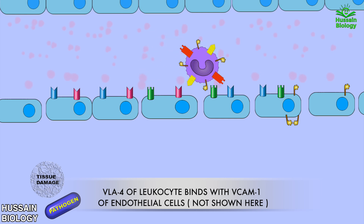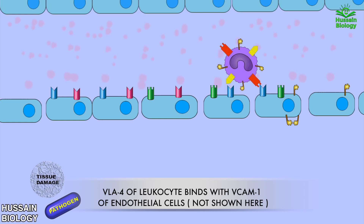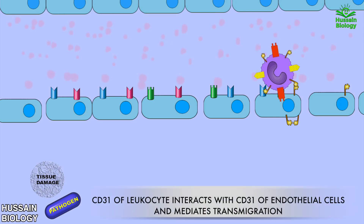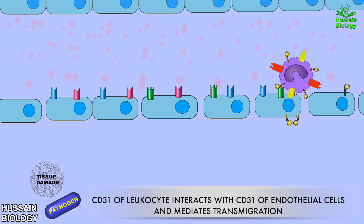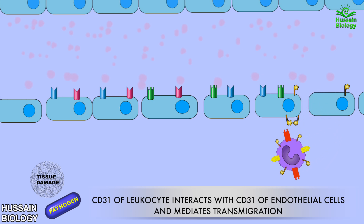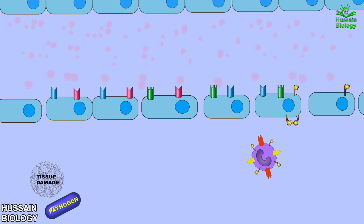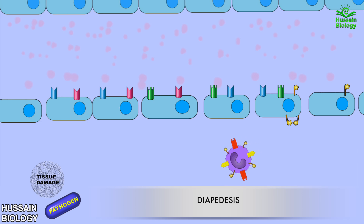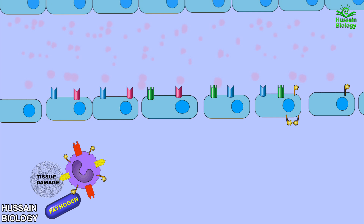After all these events, the leukocyte cells now migrate towards the target site. It is the action of CD31 molecules, present on both endothelial cells and leukocytes, that mediates the transmigration process. This process is termed diapedesis. From here, chemokines direct the leukocytes towards the target site where they can repair the damage or eliminate the pathogen.